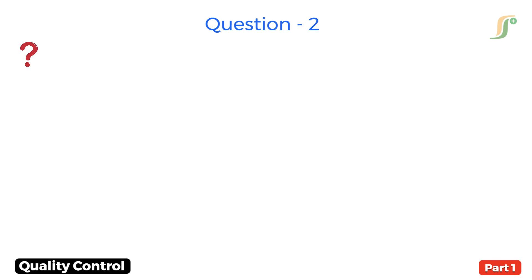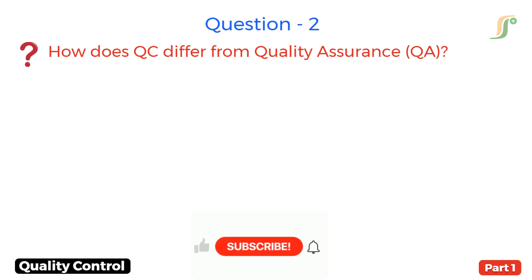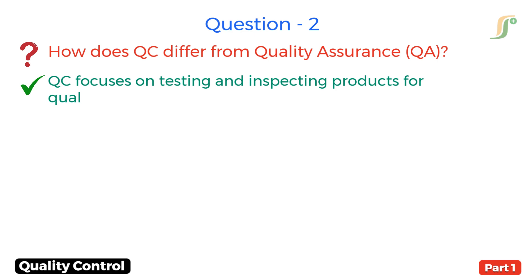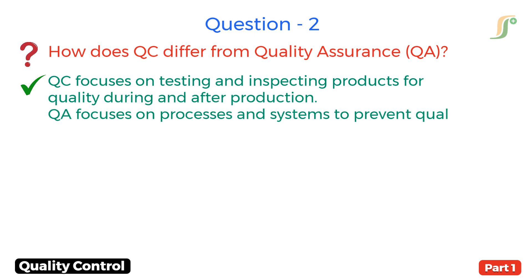Question 2. How does QC differ from quality assurance? Answer. QC focuses on testing and inspecting products for quality during and after production, while QA focuses on processes and systems to prevent quality issues.